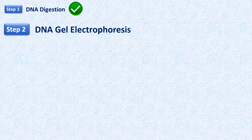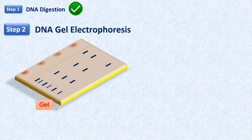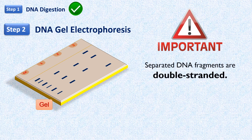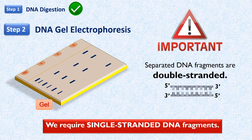The second step is DNA gel electrophoresis. The separation of DNA fragments resulting from the first step is done by gel electrophoresis, and the DNA fragments get separated according to their molecular weights. We need to note that these separated DNA fragments are double-stranded, but for the hybridization step, we require single-stranded DNA fragments.